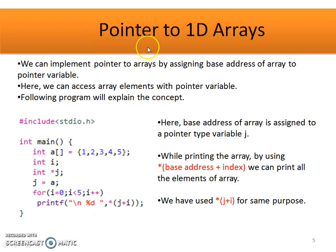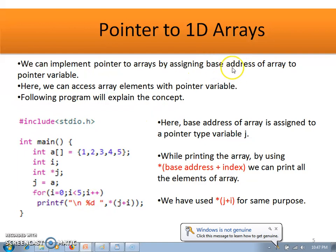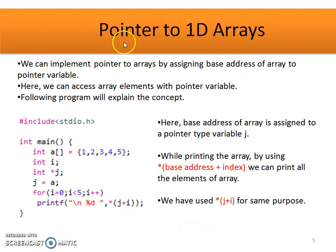Now let's start with Pointer to 1D Arrays. First of all, let's see how to implement Pointers to 1D arrays. All the tasks we can do with the help of the base address of the array. Base address of the array is nothing but the starting address of the array. By assigning that base address to a Pointer type variable, we can implement Pointer to 1D arrays.